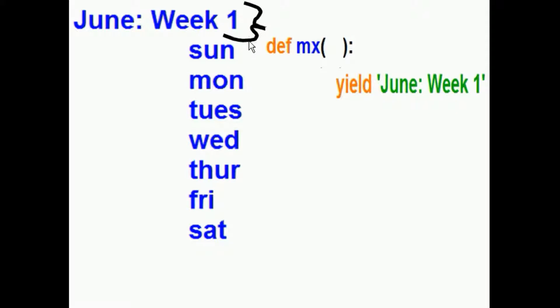I also defined a generator function for the month, June, week one. It'll just yield up June, colon, week one. But wouldn't it be nice if after it yields up June week one, and it calls this generator function? That would be nice.